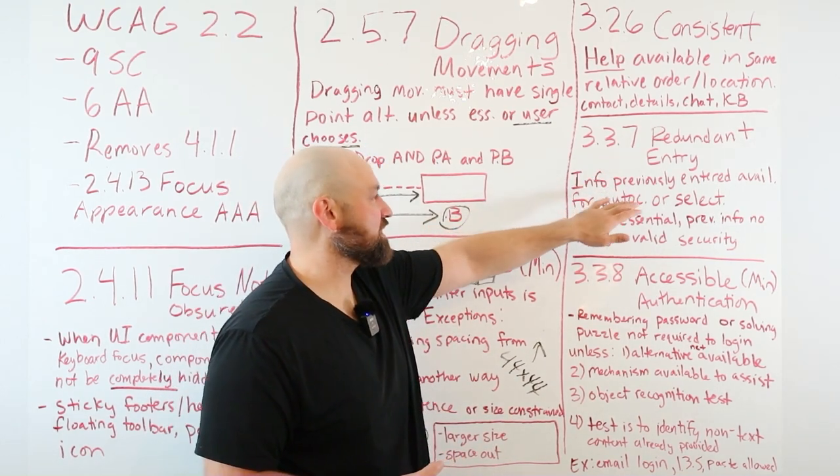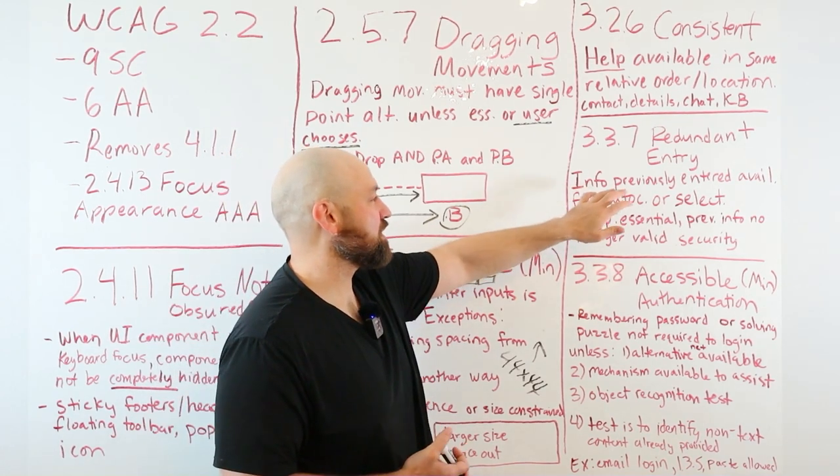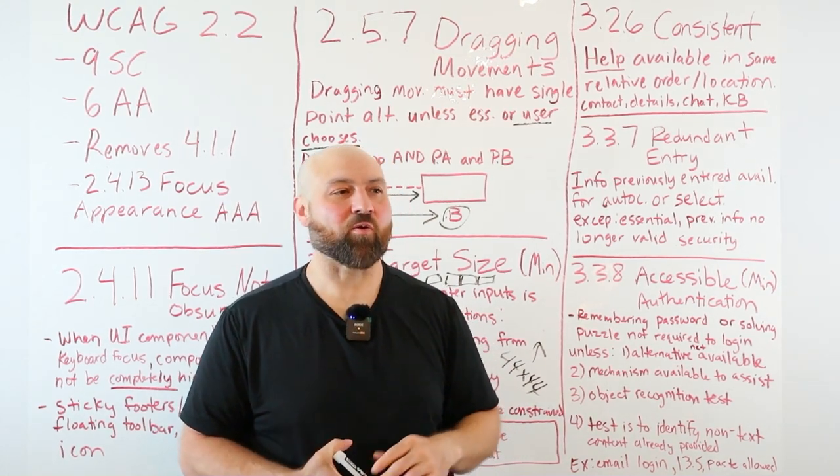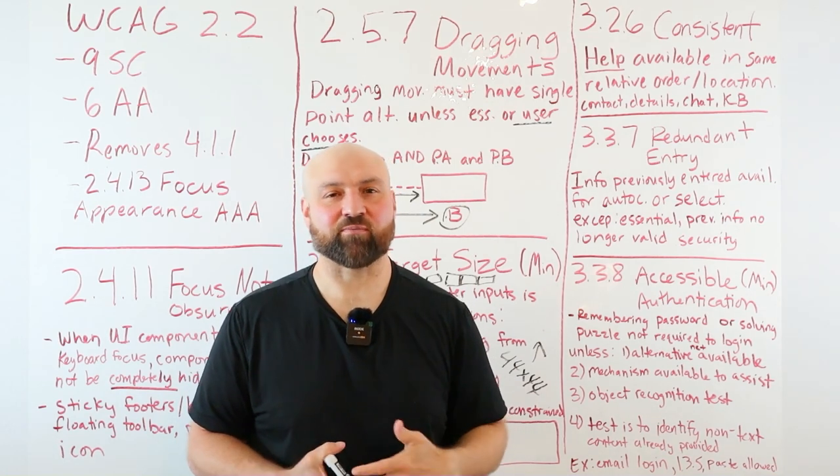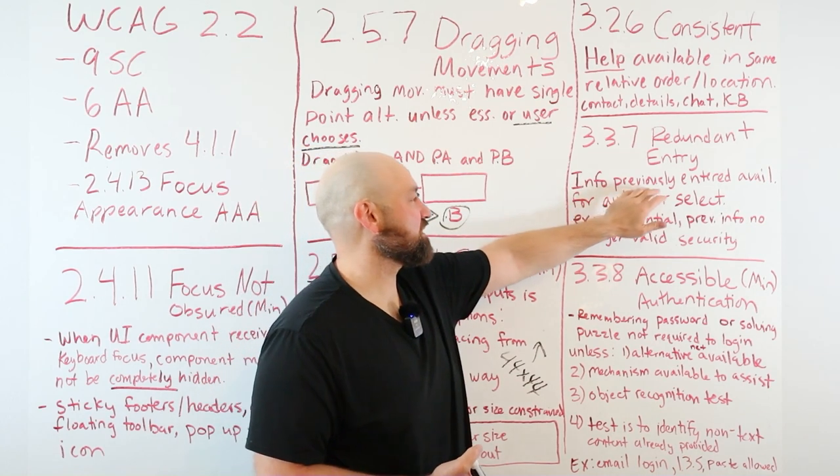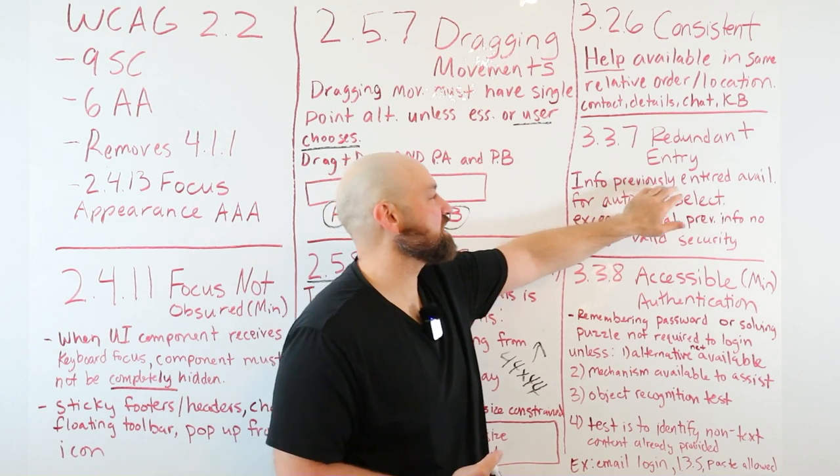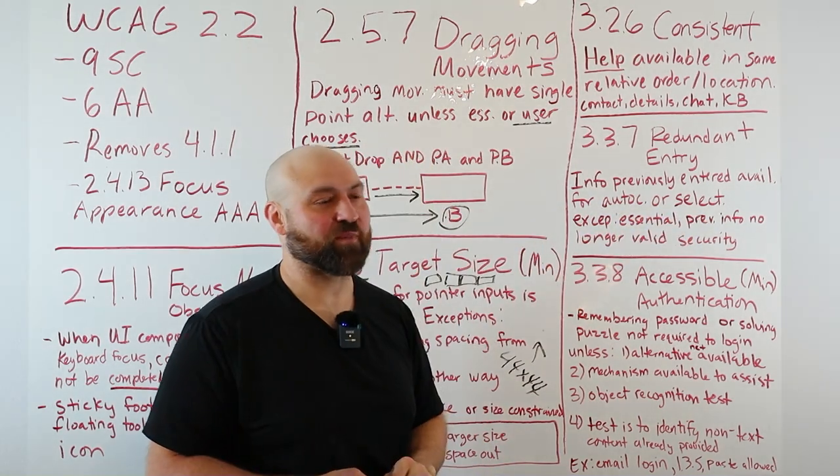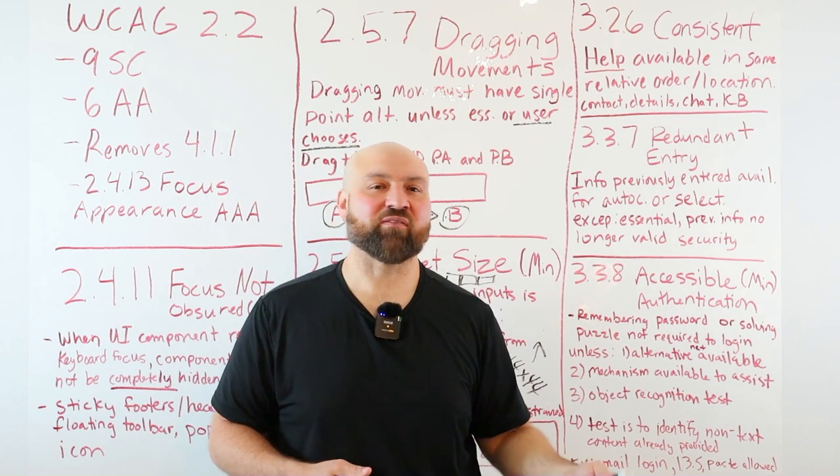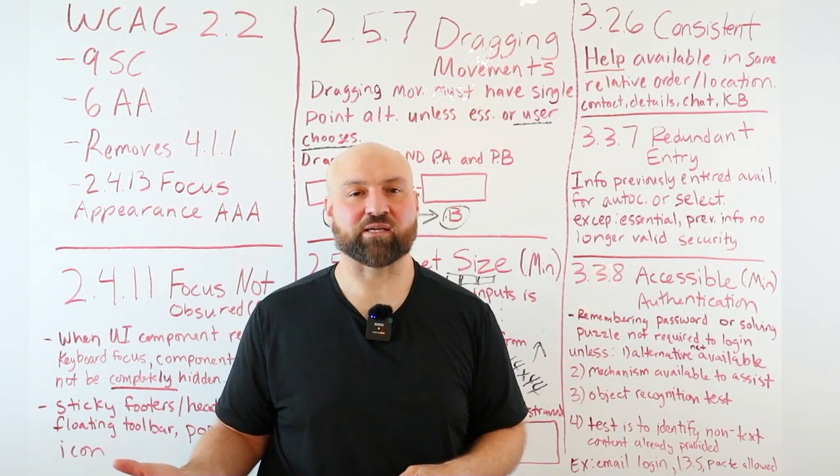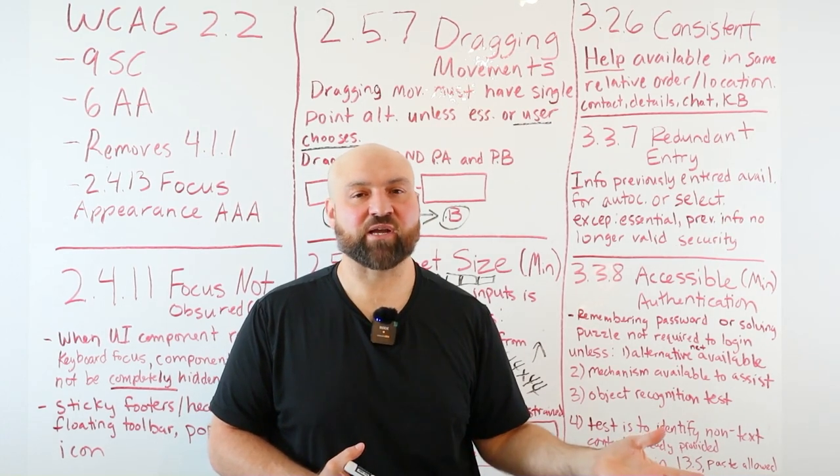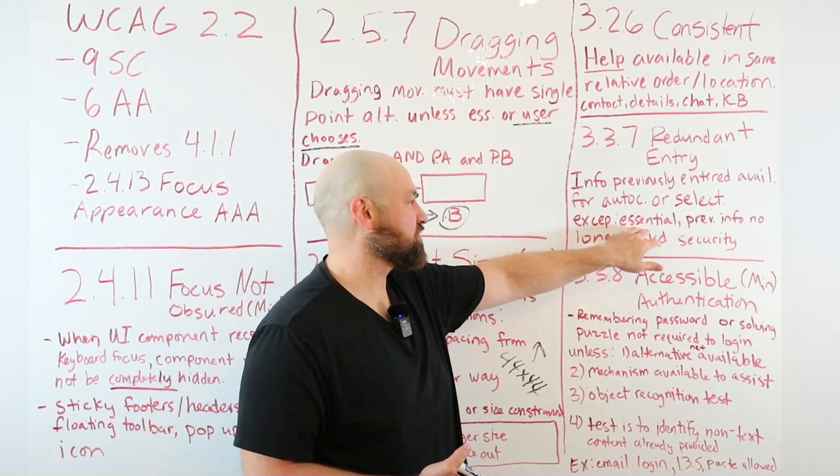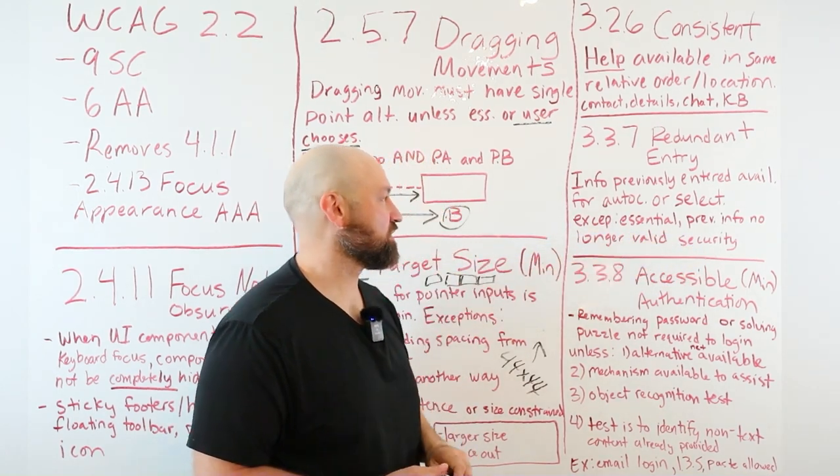3.3.7 is Redundant Entry. This is especially important for longer forms. Think about if you have one of those monumental job applications and they ask the same information over and over, or you're filling out an apartment application online. We're making sure information previously entered is available. By available, I mean it's available for autocomplete or you can select that previous information. A classic example is with a billing address. If you've already entered your billing address, a lot of times it's the same as the shipping address, so we make sure that information is available for entry for the shipping address. That's all we're getting at.